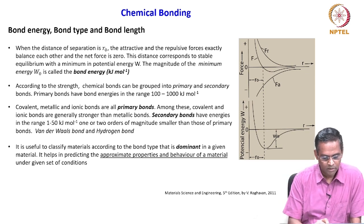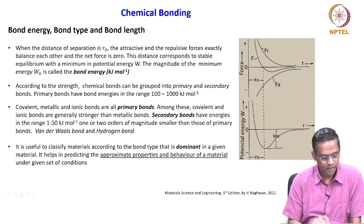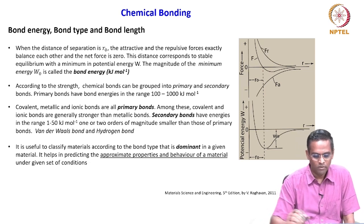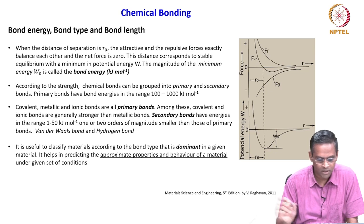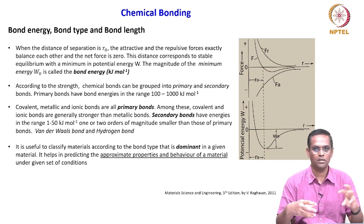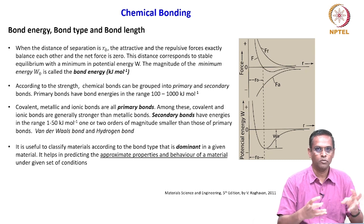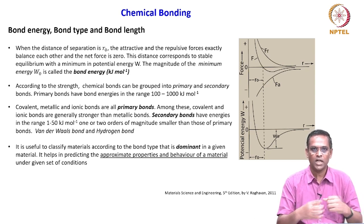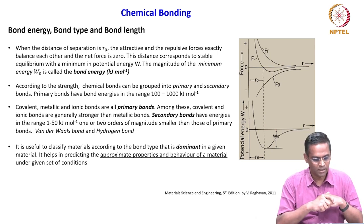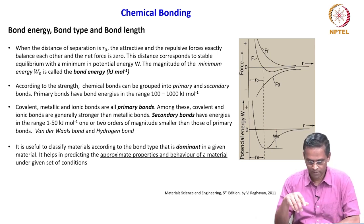It is useful to classify materials according to the bond type that is dominant in a given material — it helps in predicting the approximate properties and behavior under a given set of conditions. A bond can have more than one character — for example, ionic and metallic, or ionic and covalent. Knowing which character is dominant makes it easier to predict behavior.